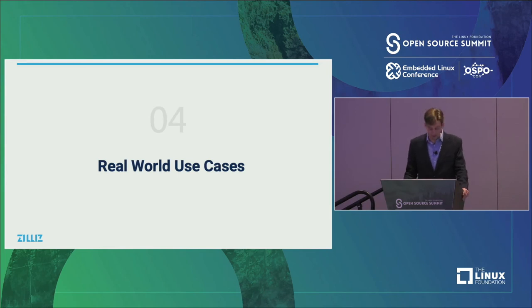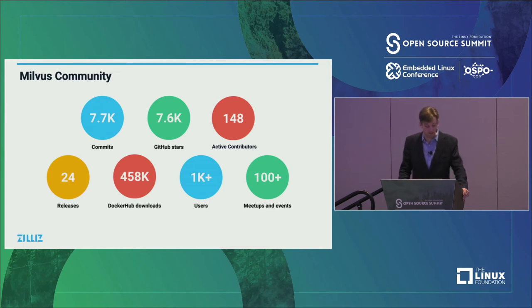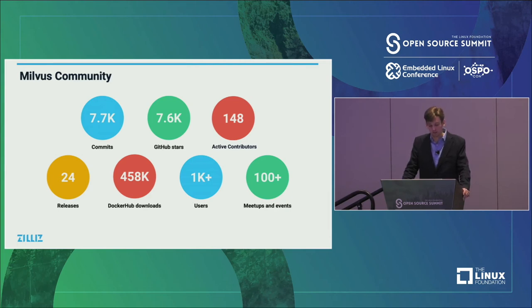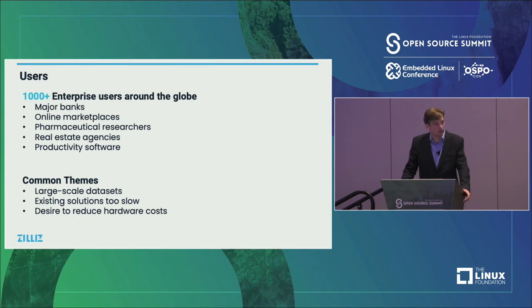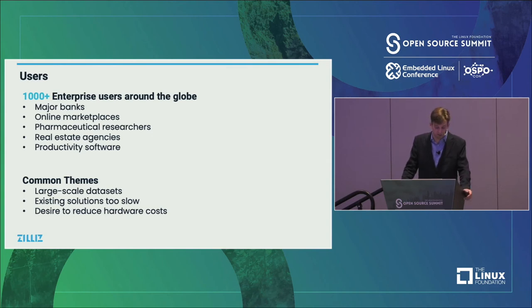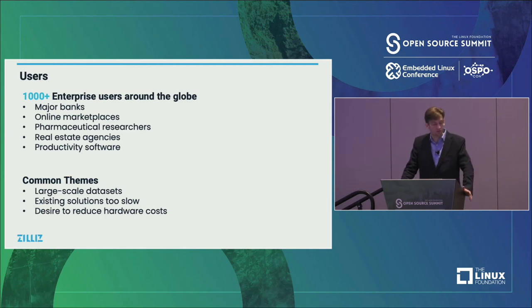Now for real-world use cases. As of today, Milvus has over 8,000 commits and 8,000 GitHub stars, 148 active contributors, 24 releases, almost half a million Docker Hub downloads, over 1,000 users, and has been to over 100 meetups and events. Among the 1,000 enterprise users globally, Milvus is used in major banks, online marketplaces, pharmaceutical research companies, real estate agencies, and productivity software companies. Common themes: they have large-scale data sets (usually 10 million+ entities), their existing solutions are too slow, and they want to reduce hardware costs.